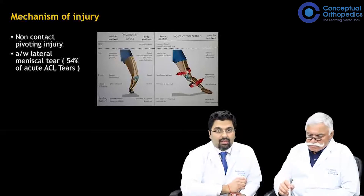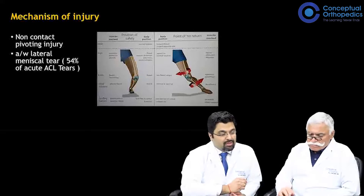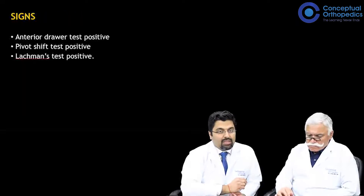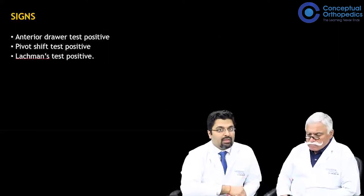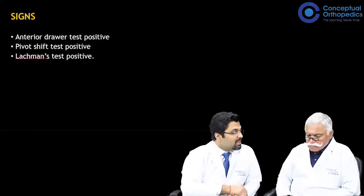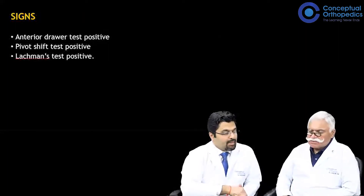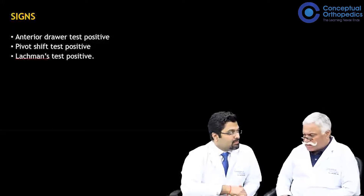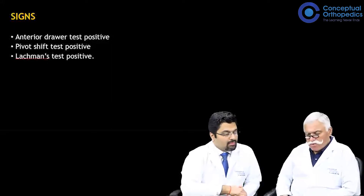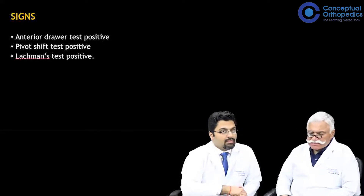The signs to look for in a case of ACL tear include hemarthrosis, which can be detected by a patellar tap. One can also perform a Lachman test, an anterior drawer test, and a pivot shift test. Essentially, we are trying to elicit increased anterior mobility of the tibia relative to the femur.